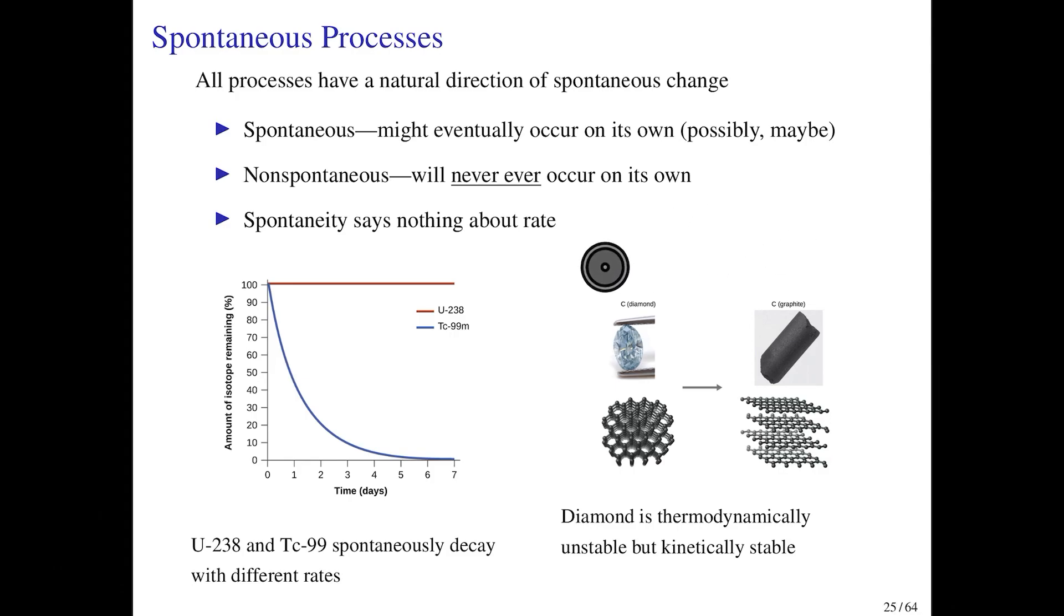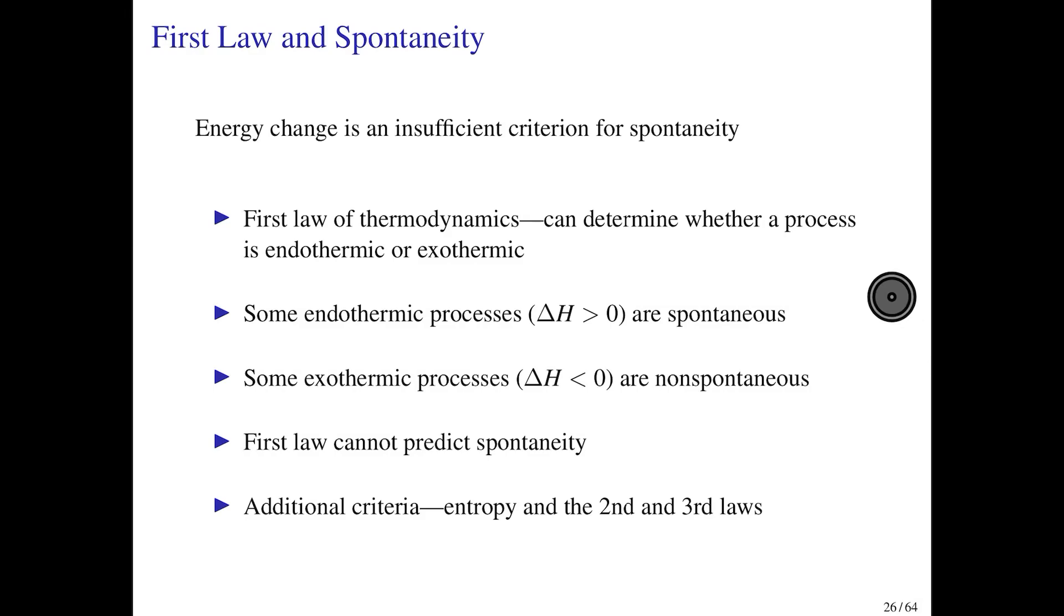The reason they're stable is because it is such a slow process for diamond to rearrange to form graphite that it essentially never occurs. You can have a process that is thermodynamically favored in terms of spontaneity, but kinetically it just simply won't occur in any finite amount of time.